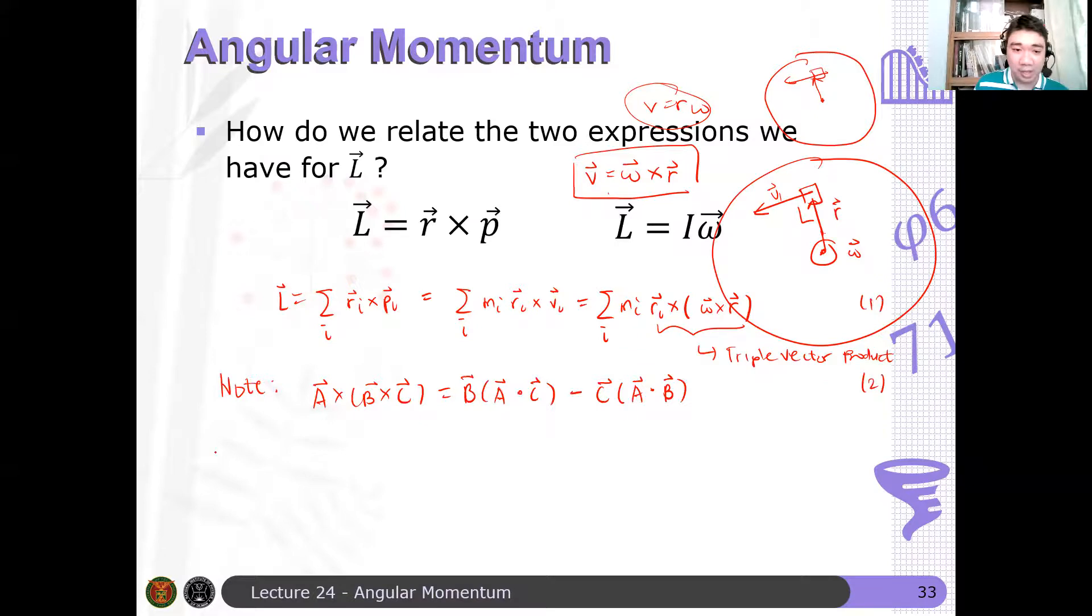And it turns out, and I will not prove this, that A cross B cross C has what we call the BAC-CAB rule in vector algebra. If you have a triple vector product, I can write this as B times (A dotted with C), so the dot product of A and C multiplied by the vector B, minus C times the dot product of A and B. I will use that rule in this equation. So let's say this is equation one and this is equation two. And I see that L is just equal to summation over i, m_i multiplied by an expression. So I write this as omega multiplied by r_i dotted with r_i, minus r_i multiplied by r_i dotted with omega.